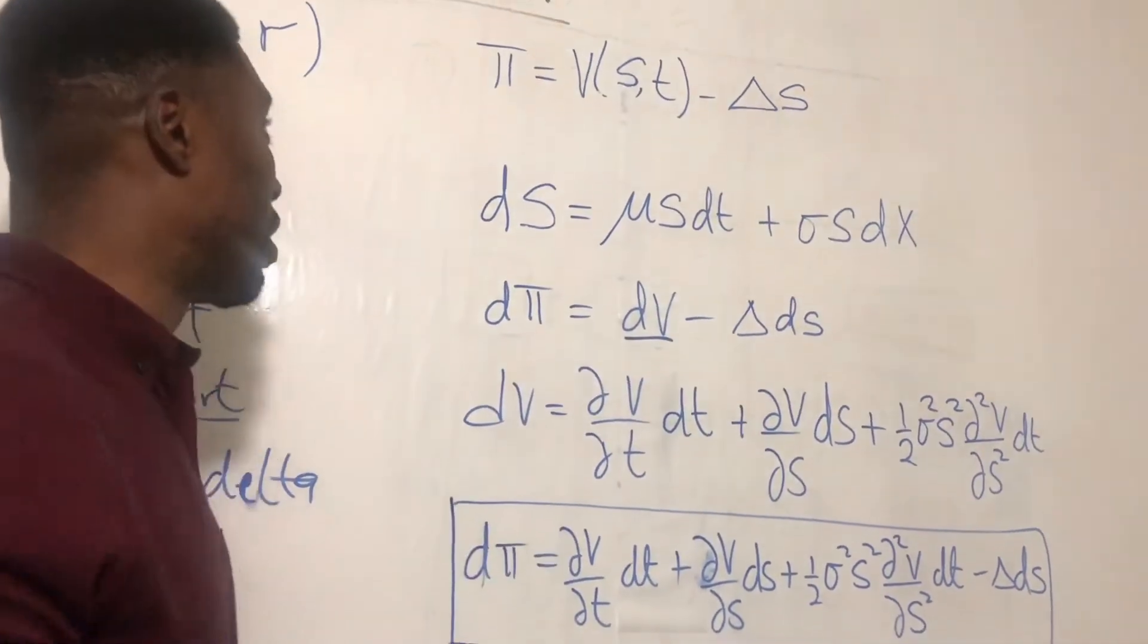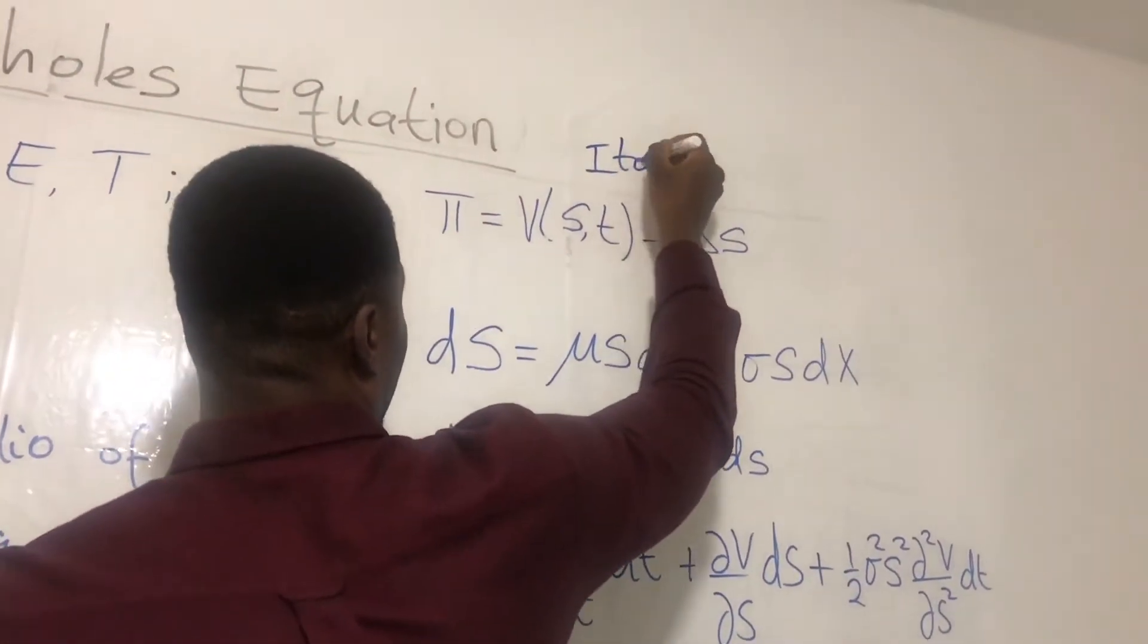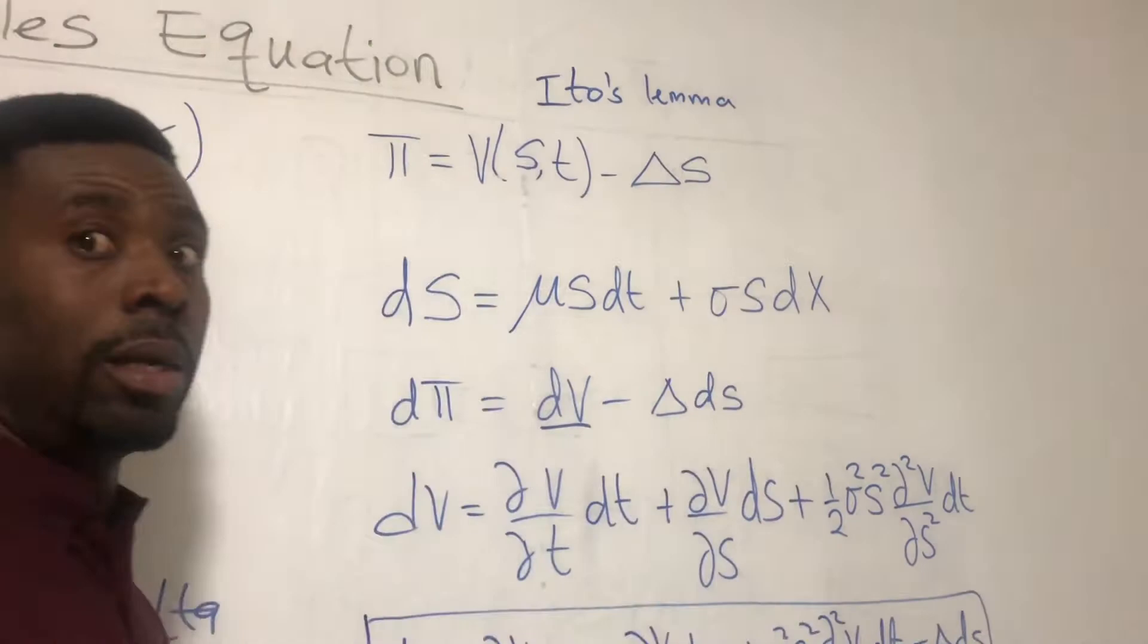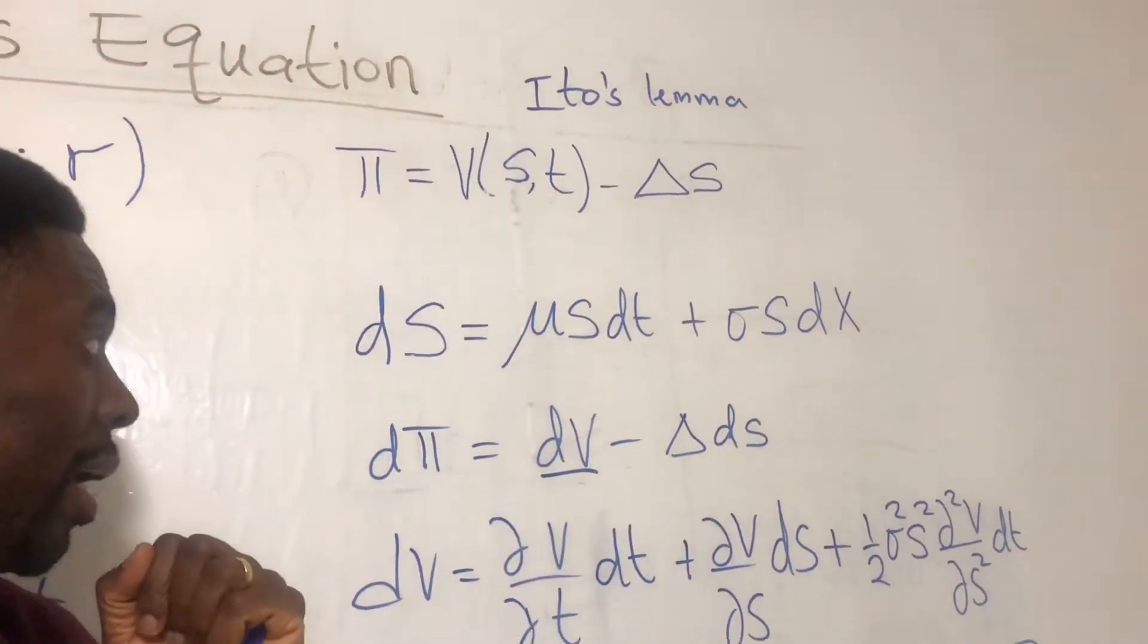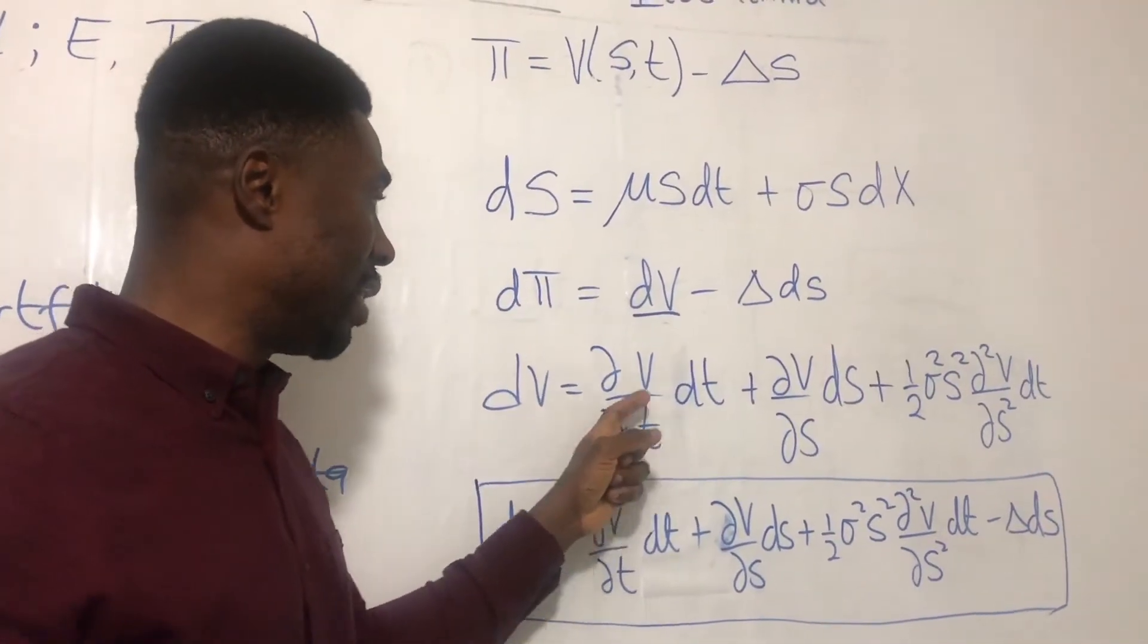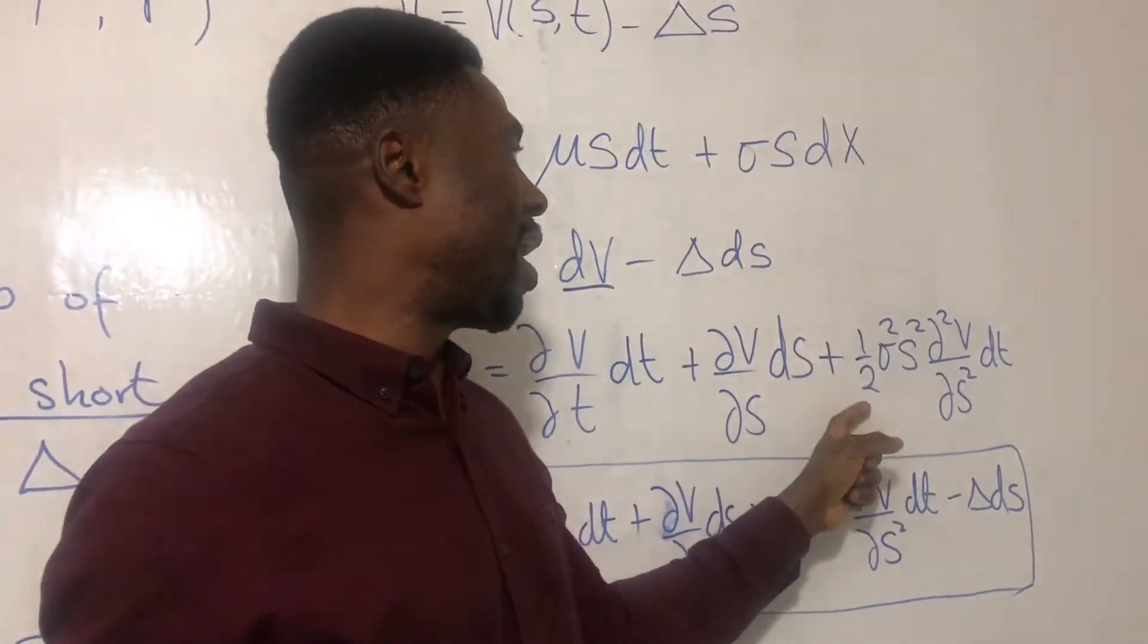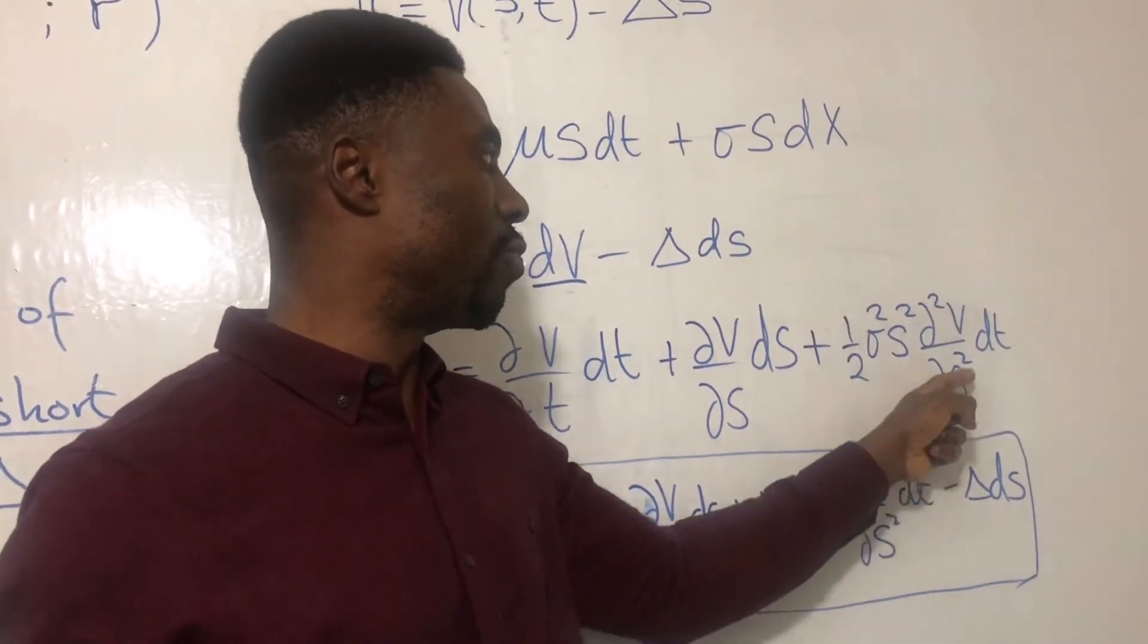We also know from Ito's lemma. And if you haven't watched the video already on Ito's lemma, then you can watch my video on Ito's lemma, where I have explained everything to do with Ito's lemma, a very important lemma in financial mathematics. So here, Ito's lemma gives us dV to be ∂V/∂T dt plus ∂V/∂S dS plus one half σ² S² ∂²V/∂S² dt.